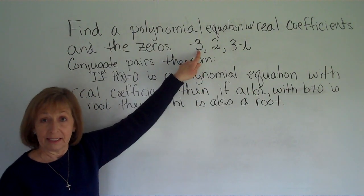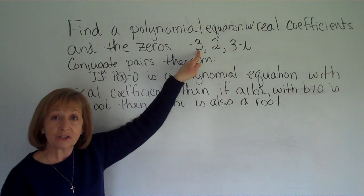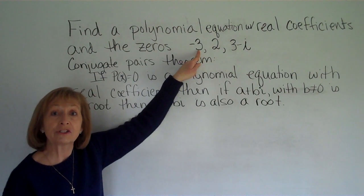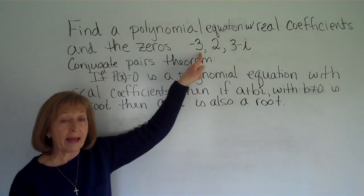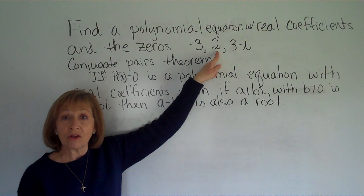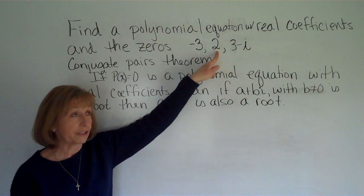Since my negative 3 is a real number, it doesn't have an imaginary part in it, the coefficient in front of the i is 0, then I don't need any pair to go with that. 2 is also a real number, so I won't need an additional root to go with that to get my real coefficients.